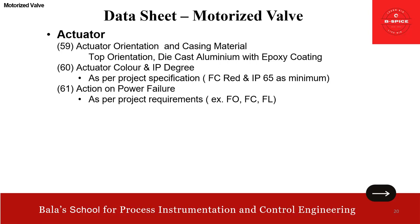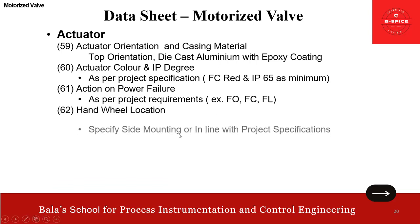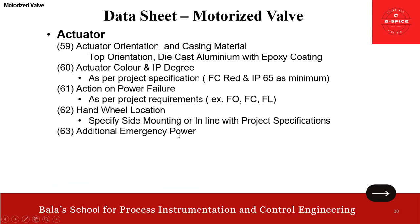In case the process requirements need to close or open on power failure, we need to come with an alternate solution. Handwheel location — specify side mounting or in line with project specification. Then additional emergency power — if it is needed. Why I highlighted this: action on power failure — if we don't want fail last but rather fail open or fail close, then we need to consider the emergency power requirement. That's the key point.